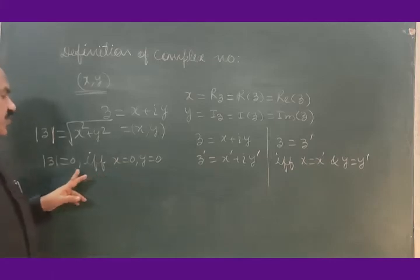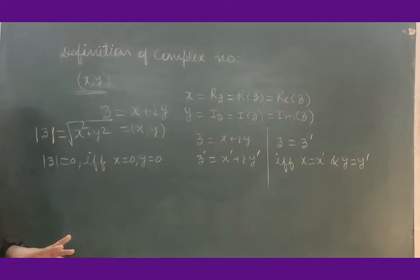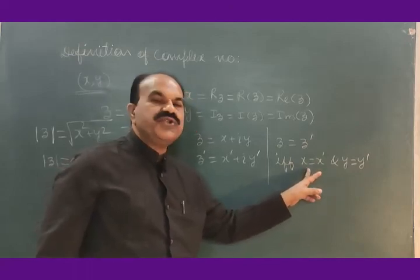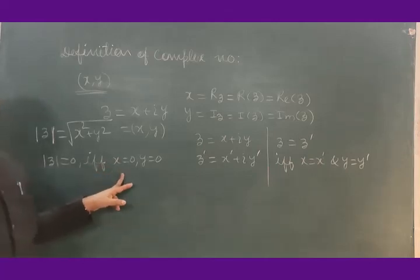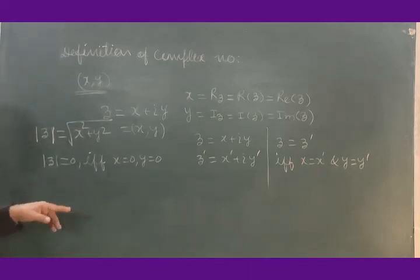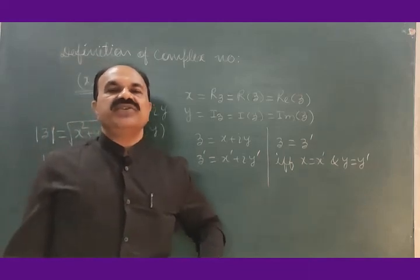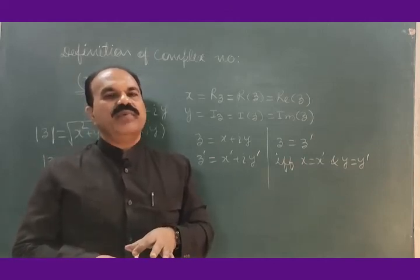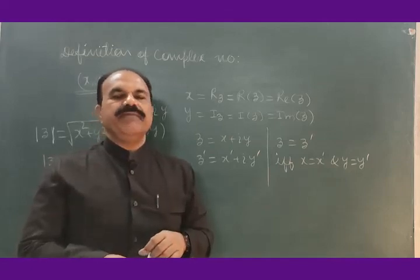If x is not 0 and y is 0, |z| will not be 0. If y is not 0 and x is 0, |z| will not be 0. So to have |z| equal to 0, both x and y must be 0. This is the definition of a complex number and a short introduction to complex numbers. Next we have to talk about the algebra of complex numbers, which we shall start in the next lecture. Thank you.